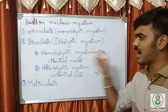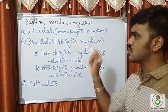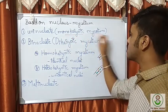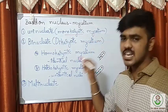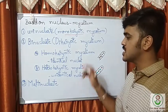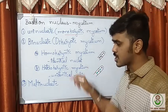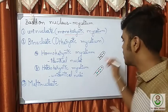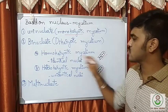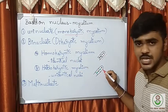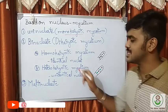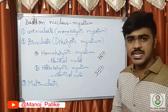Based on the nucleus, mycelium may be uninucleate, binucleate, or multinucleate. Uninucleate mycelium contains only one nucleus — this is the monokaryotic mycelium. Binucleate is the dikaryotic mycelium, which has two further types: homokaryotic mycelium, where both nuclei are identical, and heterokaryotic mycelium, where the nuclei present are unidentical or different.